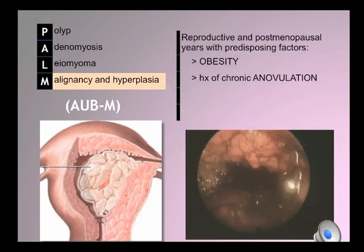Malignancy and hyperplasia must be considered in any woman in the reproductive and postmenopausal years, especially when there may be predisposing factors such as obesity or a history of chronic anovulation.